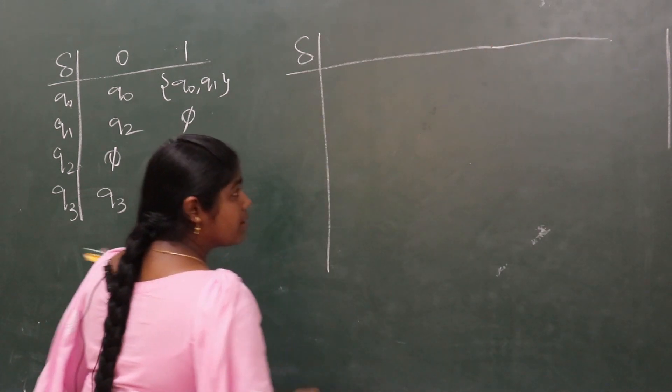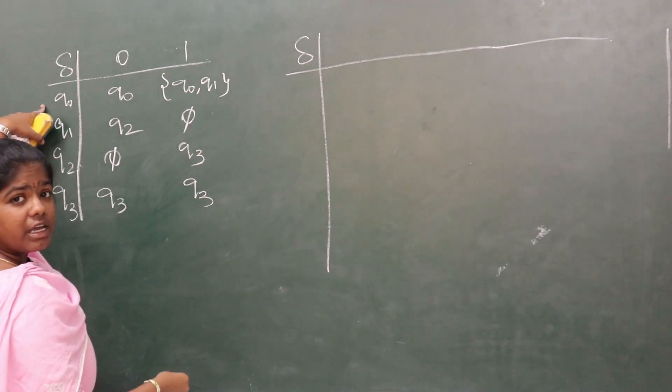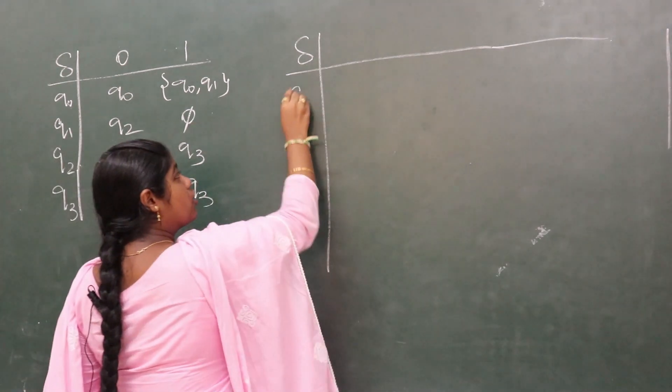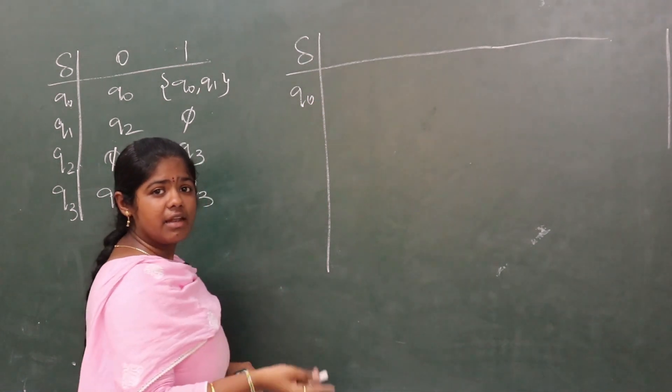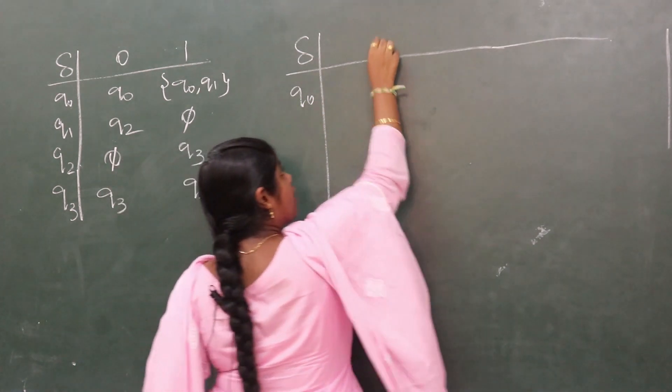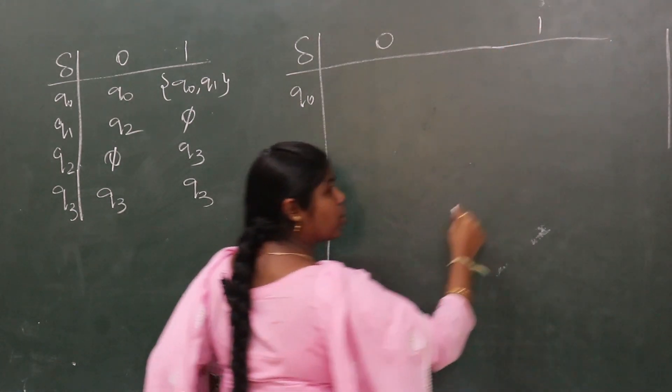first we need to construct the transition state for DFA. Let the starting state for DFA be q0. q0 is the starting state for DFA as well.